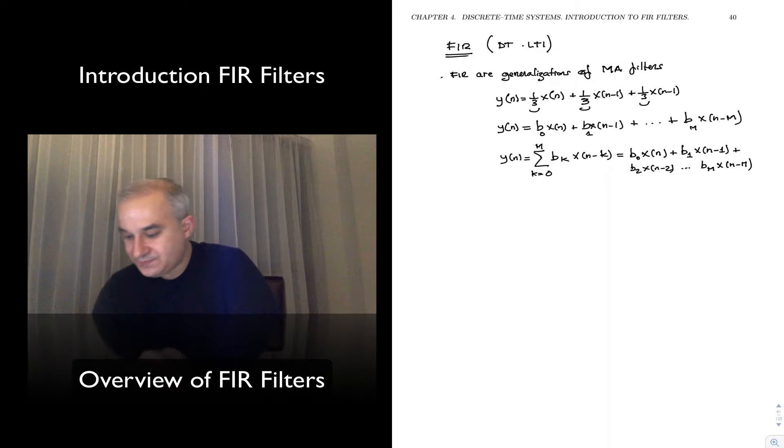So notice, you have your input here, it's going to produce an output by a linear combination. Here we have a sum of those, the present and previous input is a causal implementation, multiply times these filter coefficients, B0, B1, B2, all the way to Bm.